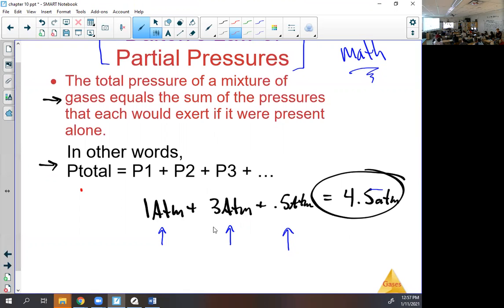In this partial pressure, if I make this a 6, tell your partner what you think it will do to that one. The total would be 7.5. Does this atm give a crap about that atm? No, the pressure of each one is independent of the pressure of the other ones. They don't care.